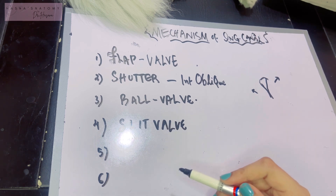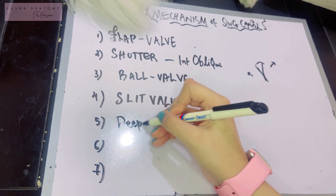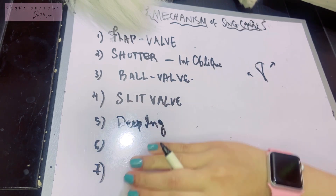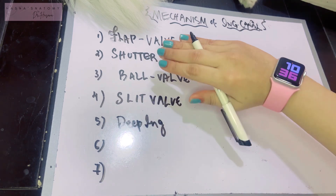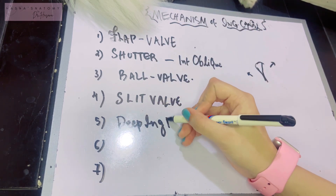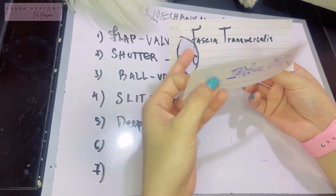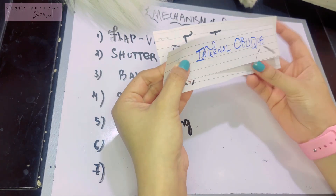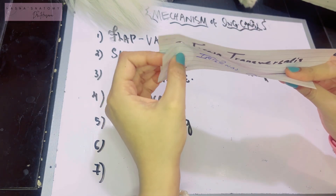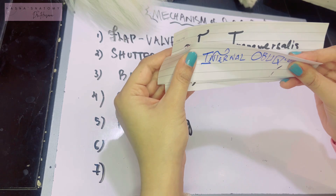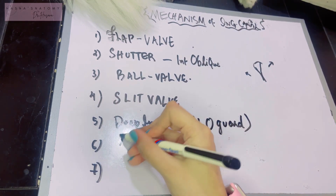The three other ways the inguinal canal is protected from weakness: first, the deep inguinal ring is covered by the internal oblique fibers, so whenever the internal oblique contracts it covers up the deep inguinal ring. Normally the canal is open, but when the internal oblique contracts it shuts off the deep inguinal ring.